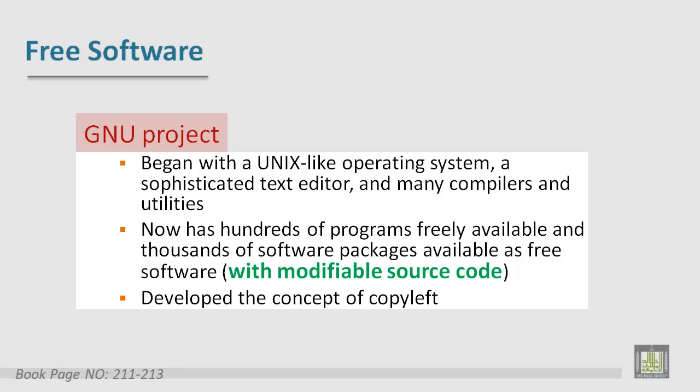Free software has many advantages: with freely distributed software, more people can use and benefit from a program. With source code available, any of thousands of programmers can find and fix bugs. Users and programmers can adapt and improve programs. Under copyleft, the developer copyrights the program and releases it under an agreement that allows people to use, modify, and distribute it or any program developed from it, but only if they apply the same agreement to the new work. No one may develop a new program from a copylefted program and add restrictions that limit its use and free distribution.